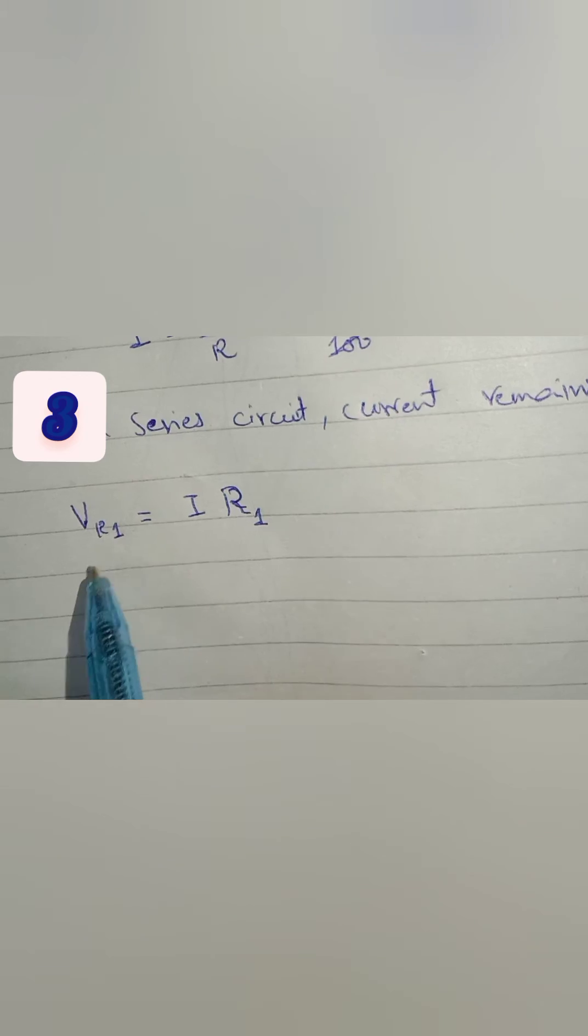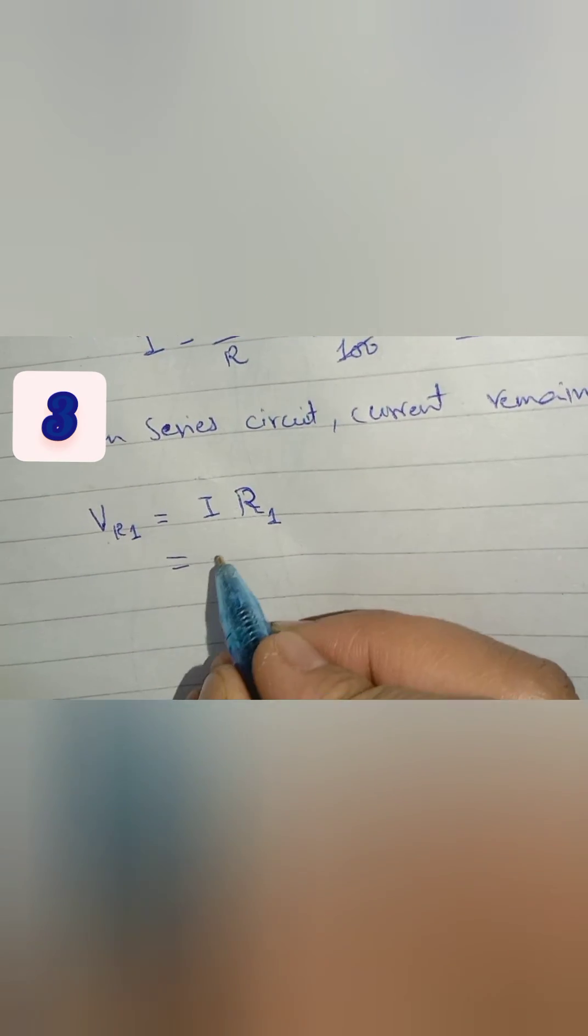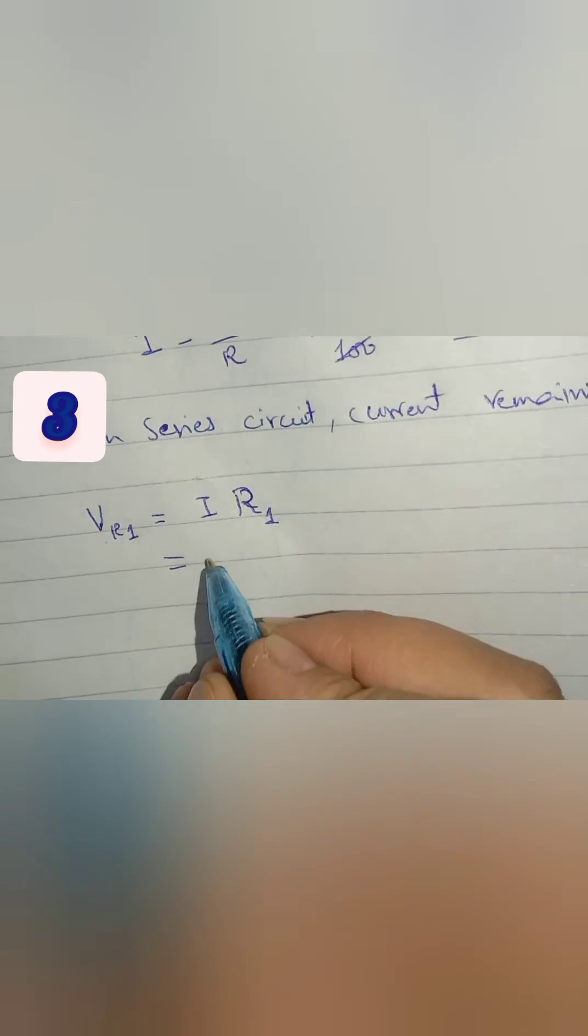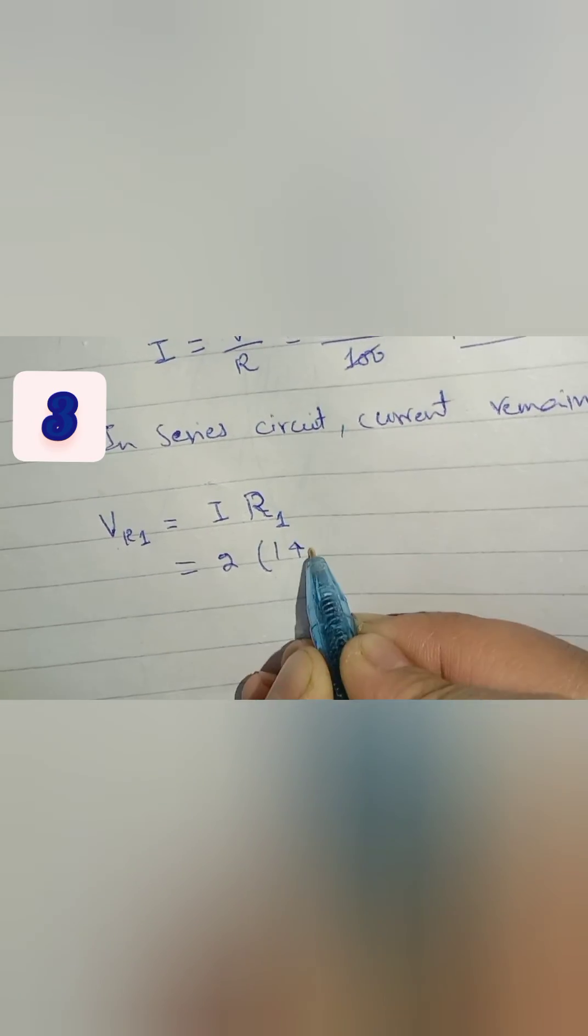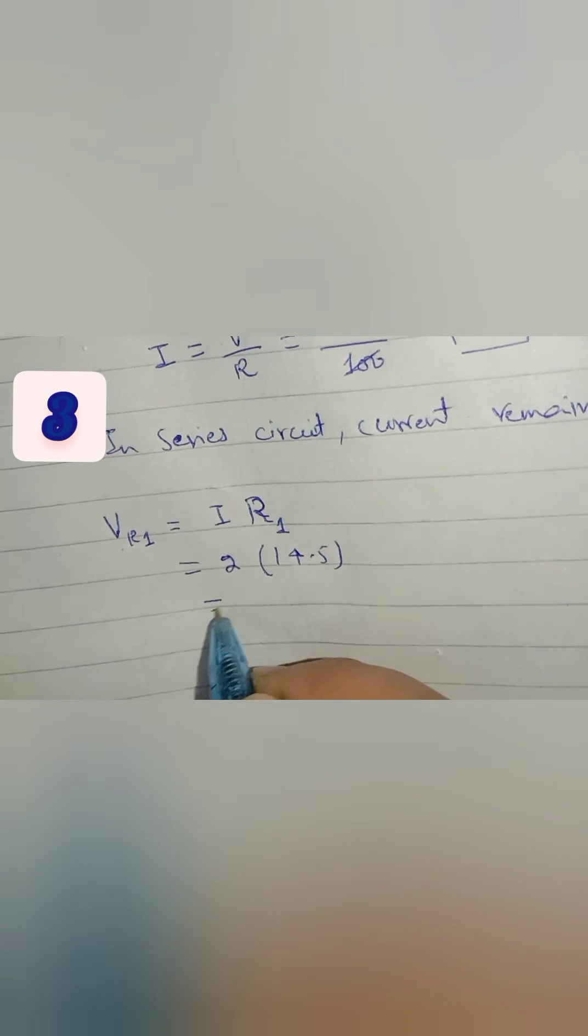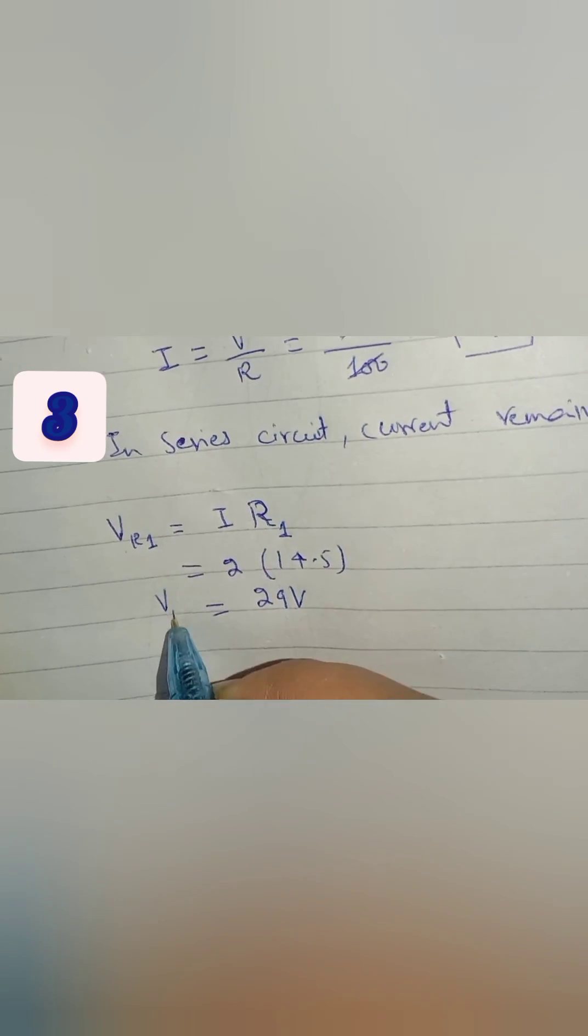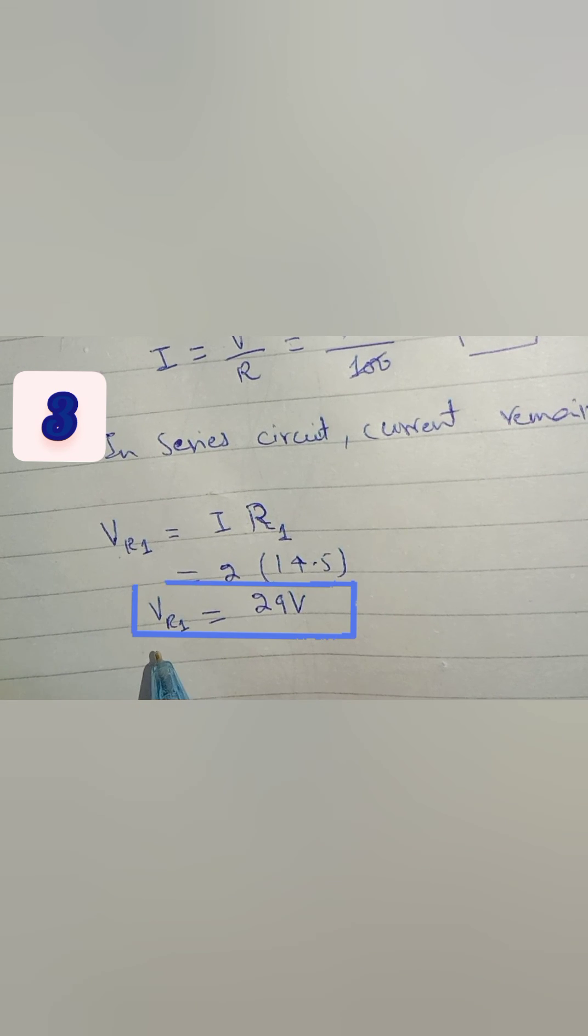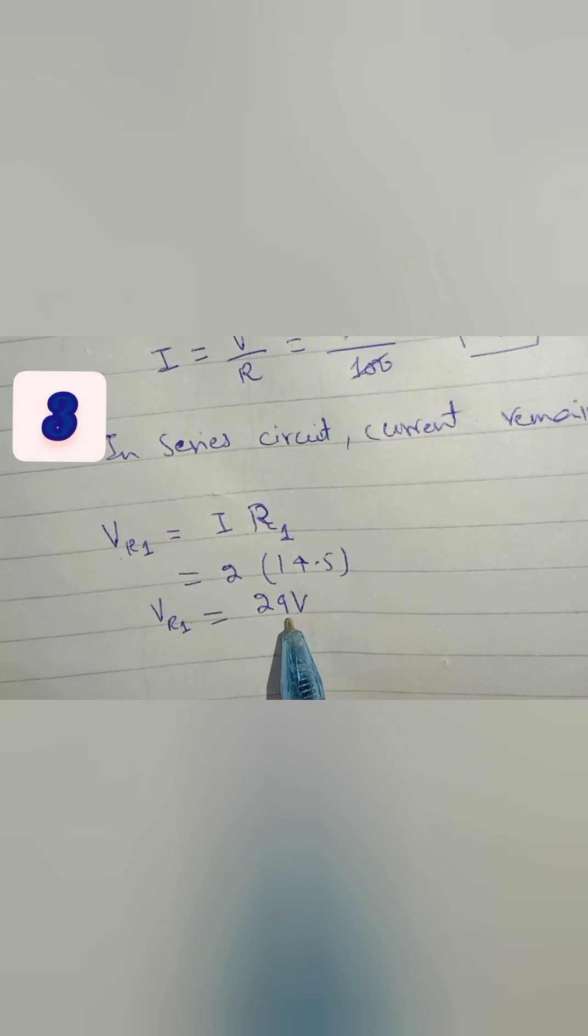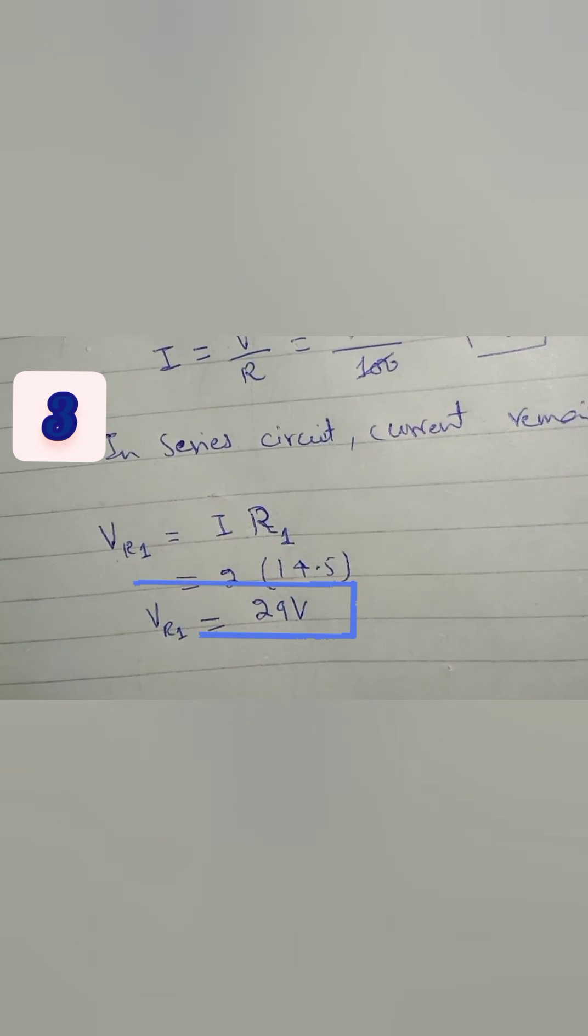So now, putting the value of current as 2 and R1 as 14.5 ohm, by multiplying we get 29 volts, which is the voltage across R1. This is our answer. Hence, by looking at our options, we can say